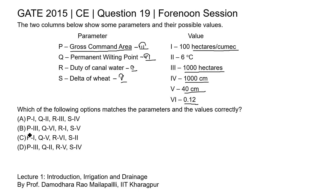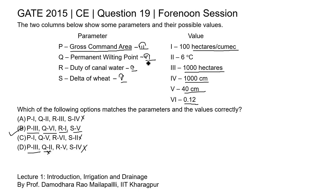Now checking the answer options. P matches 3, which appears in options B and D only — so options A and C are incorrect. Q matches 6, but in option D it is 2, so D is also incorrect. For R, the correct match is 1, which is given in option B. For S, the correct match is 5, which is also given in option B. Therefore, the correct answer is option B.